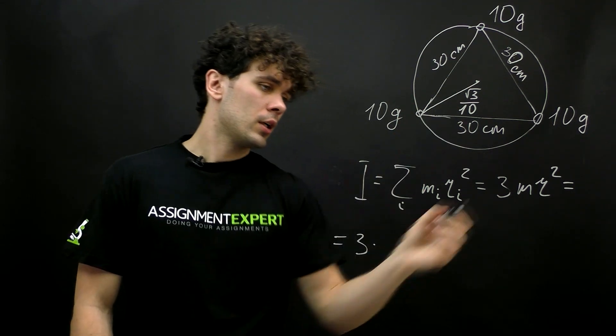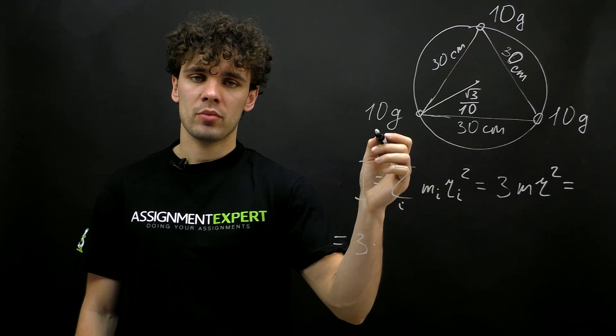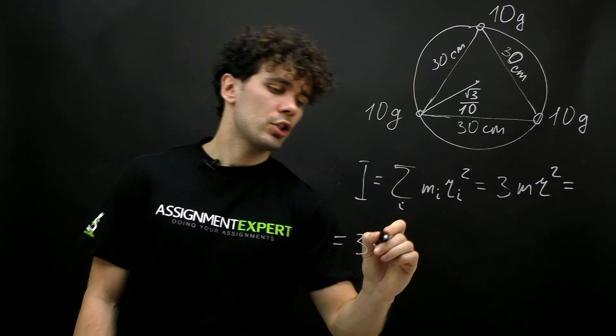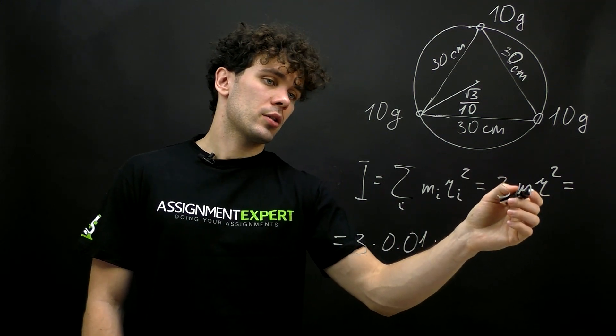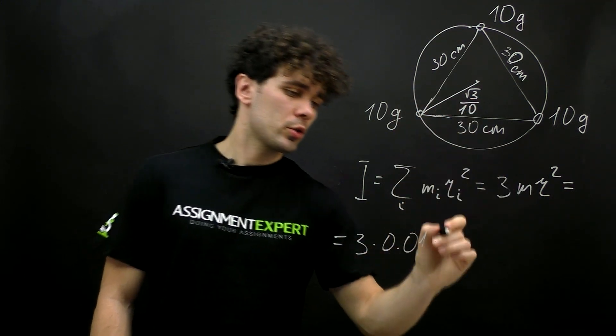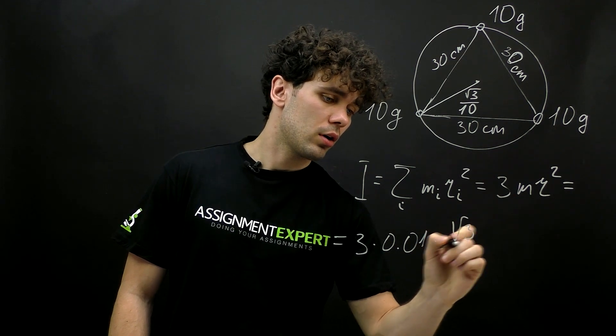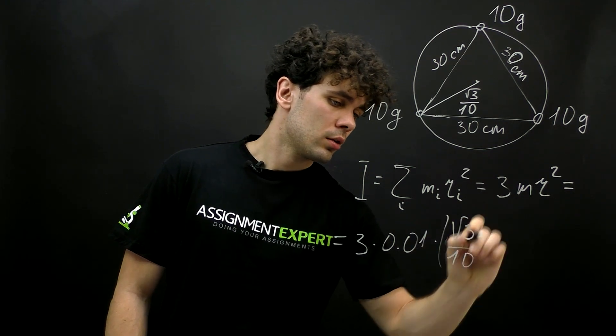We have 3 times mass, which is 10 grams. In kilograms, this is 0.01 times radius squared, which is the square root of 3 over 10 squared.